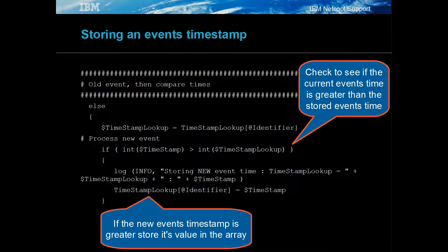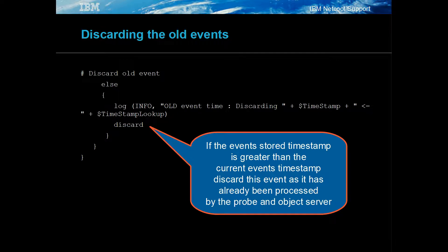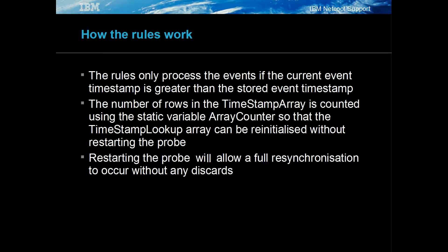If the event has already been processed, check to see if its time is greater than the stored event time, and store the event time if it is. Otherwise, initialise the UNIX timestamp using the event's unique identifier. If the current event was already processed, it can be discarded. In this manner, the rules will only process events that are newer than the events stored in the timestamp lookup array. The timestamp lookup array is automatically limited using the array counter.